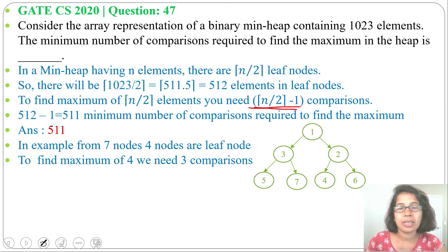So, same number of comparisons are required in case of min-heap for finding maximum element and in case of max-heap for finding minimum element. It is n divided 2 ceiling function minus 1. I already discussed this during lecture, just go through that.